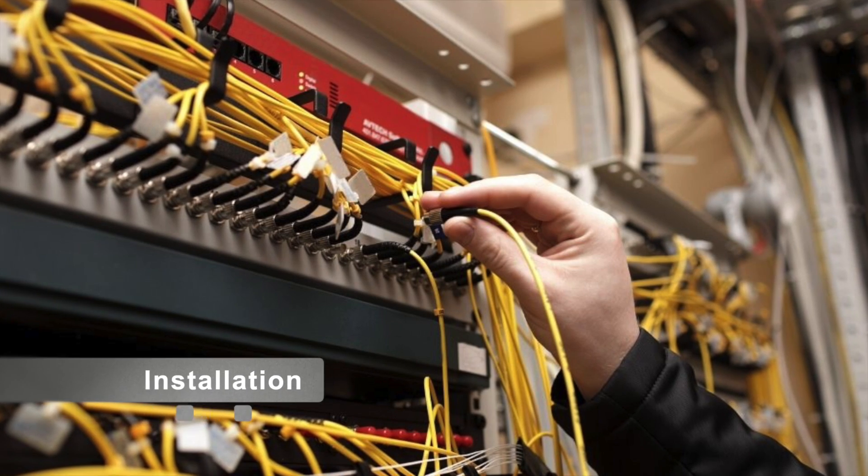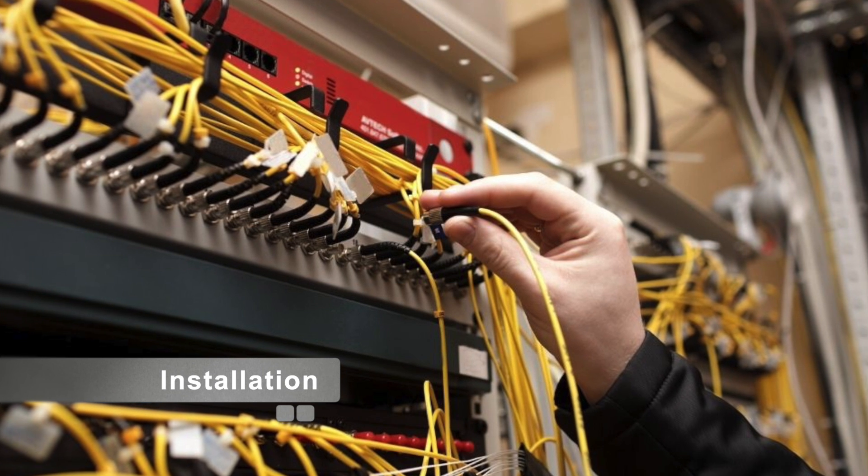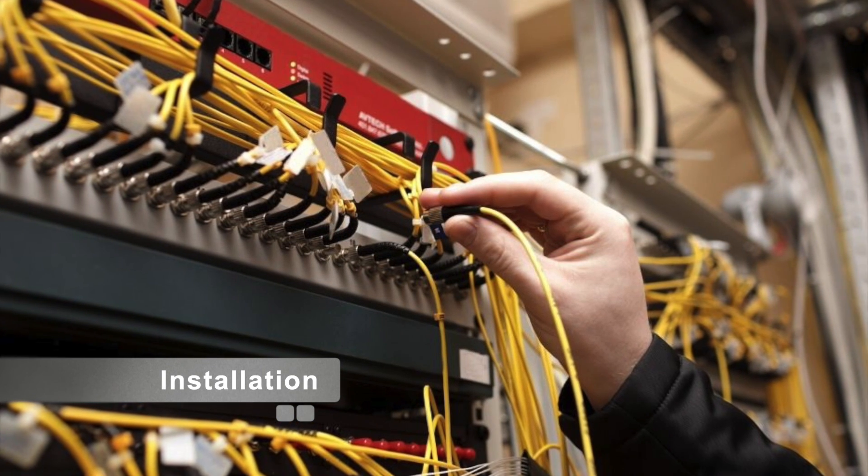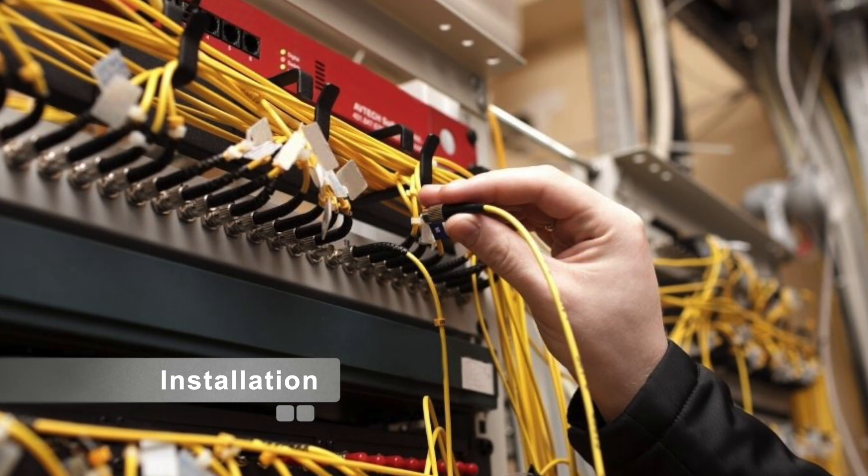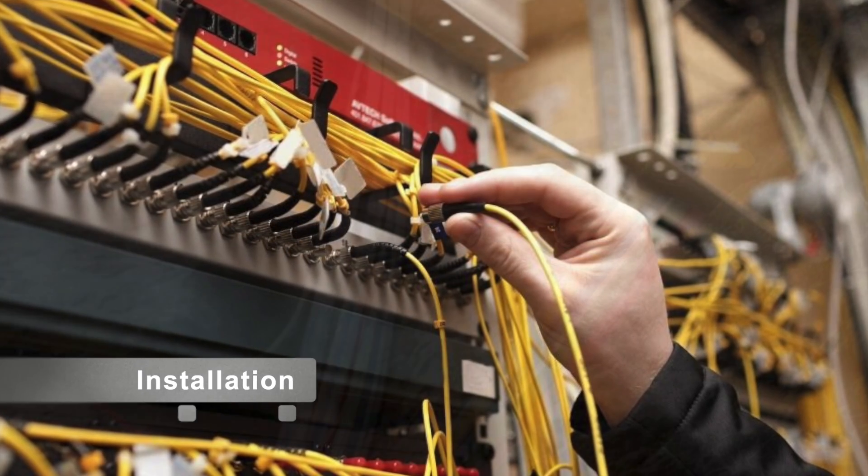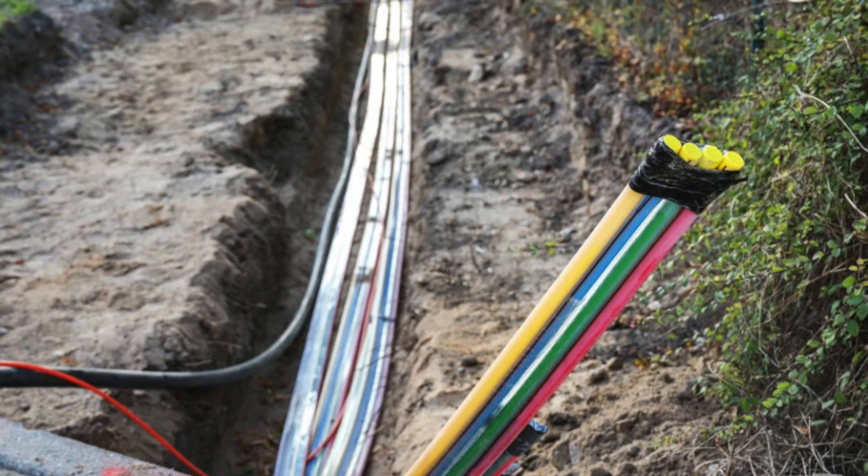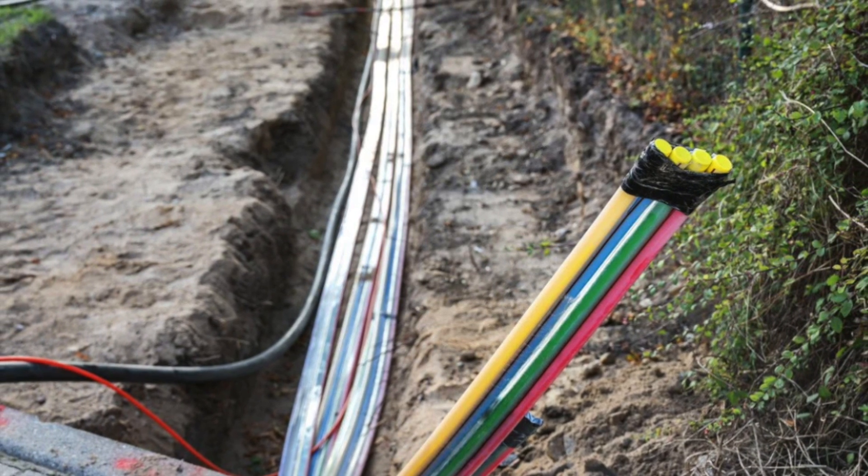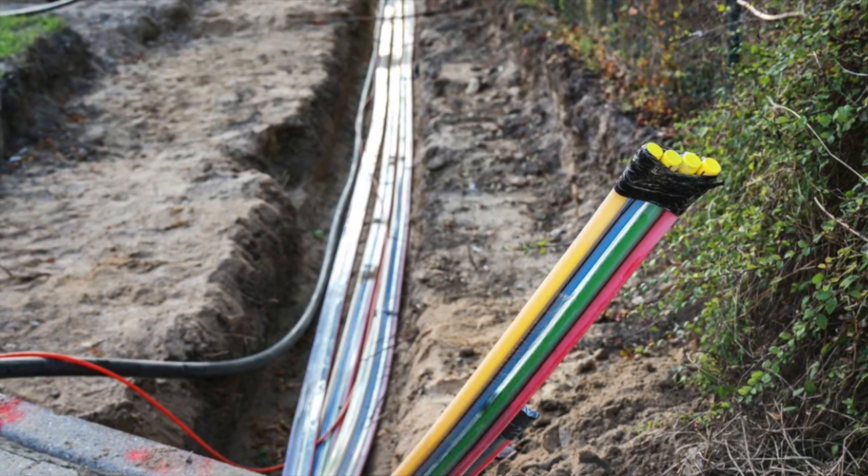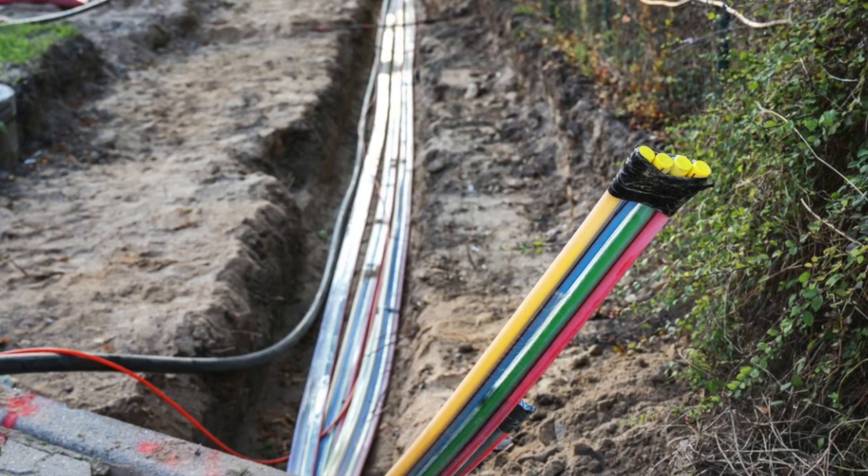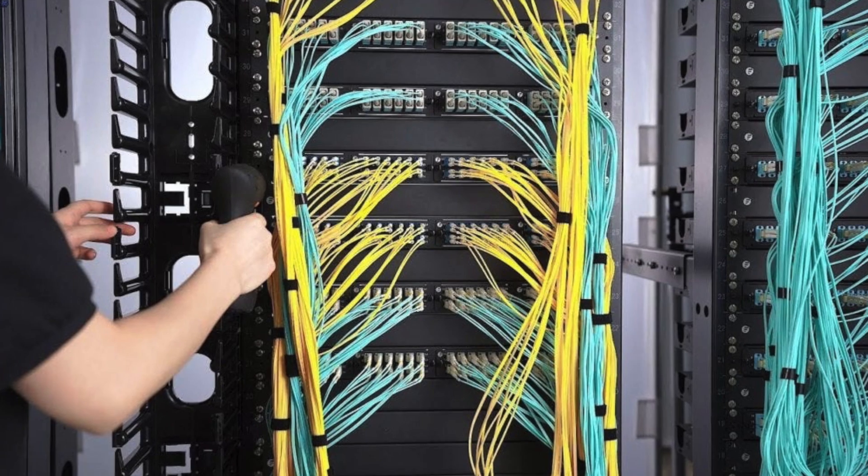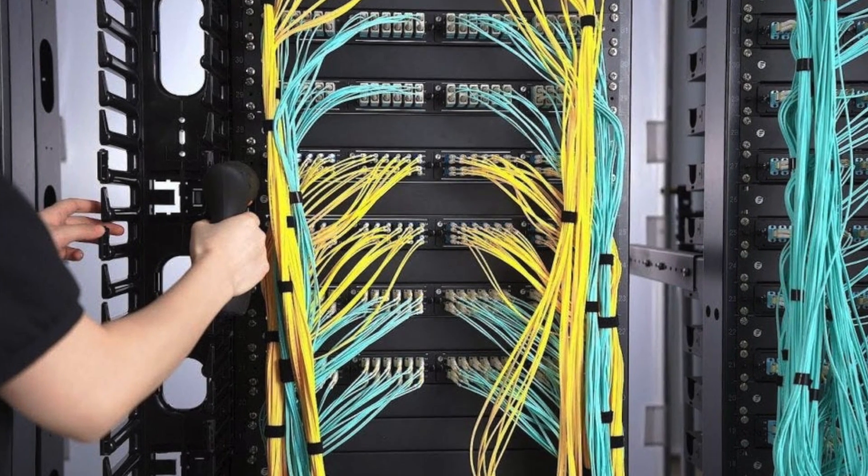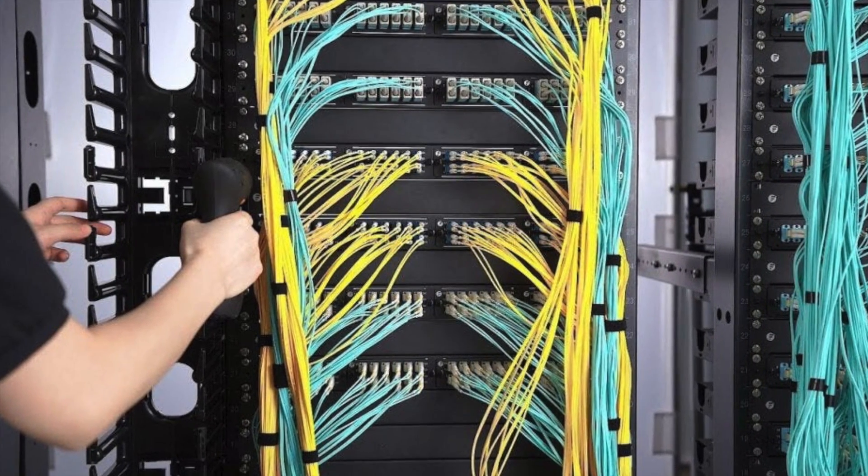The final step is the installation of the fiber optic cables. These cables are deployed in a variety of environments, from underground conduits to aerial installations on utility poles. Installation requires careful handling to avoid bending the cables too sharply, which can damage the fibers inside. Once installed, the cables are spliced together to create a continuous optical path, allowing data to travel across vast distances at incredible speeds.